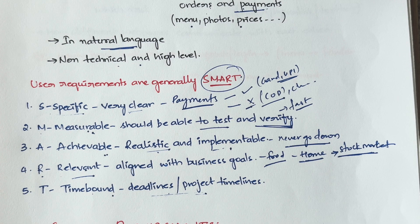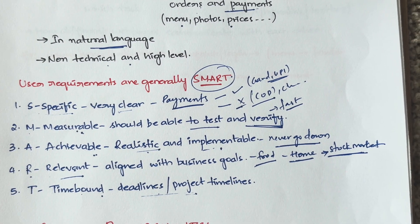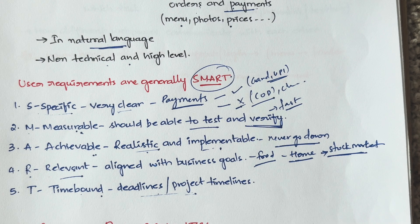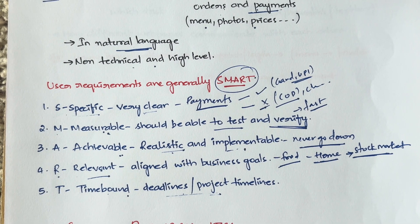T stands for Time-bound — you should have particular deadlines and timelines for the project. For example, the project should be completed in three months, six months, or one year. Within the organization you also divide the timelines: three months for development, one month for testing, and two to three weeks for deployment.